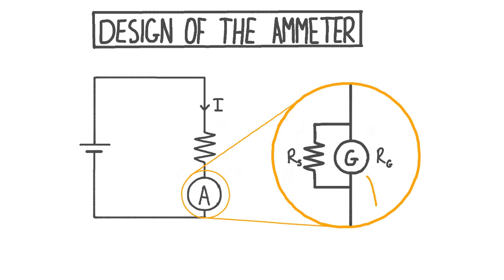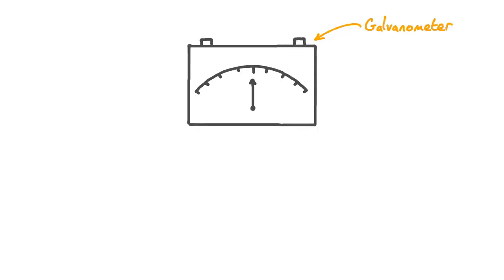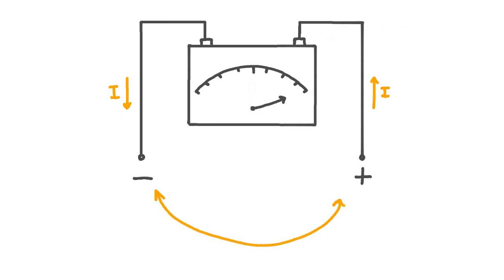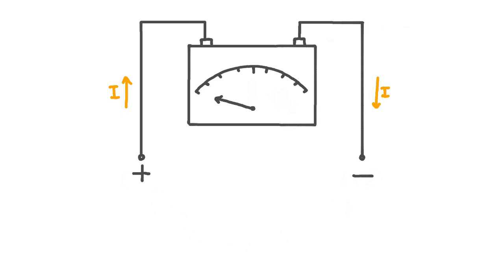Since ammeter design is based around a galvanometer, let's start by reminding ourselves how a galvanometer behaves. A galvanometer is an electromechanical device which responds to the direction and magnitude of current. If we apply a potential difference to a galvanometer, then the resulting current causes the needle on the galvanometer to deflect towards one end of the scale. If we then reverse the polarity of this potential difference, thus reversing the direction of the current, then the needle deflects toward the other end of the scale. At the moment, we can see that the needle is pointed fully toward one end of the scale — it has maximum deflection.